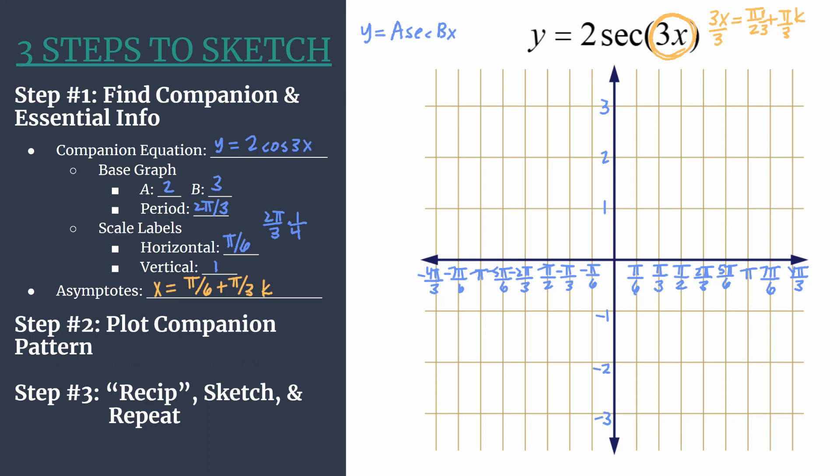We're graphing our cosine pattern. We see that this is an unreflected cosine pattern, and it's going to fall in the general pattern of maximum, x-intercept, minimum, x-intercept, and then of course we would repeat.